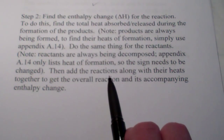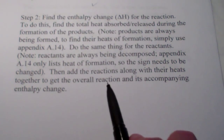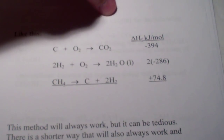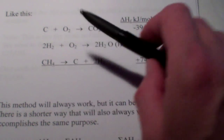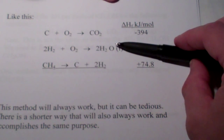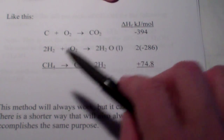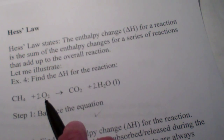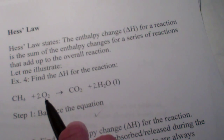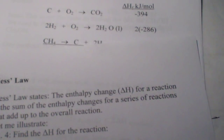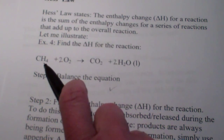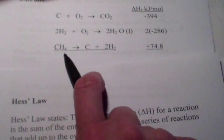We're going to add the reactions along with their heats together to get the overall reaction and its enthalpy change. I've listed the reactions for the heat of formation of my products — CO2 and 2 liquid waters — and the heat of decomposition of my reactant, CH4. You'll notice that I've left oxygen out because its heat of formation or decomposition is zero, since it's an element. CO2 and 2 waters are being formed, and CH4 is being decomposed.